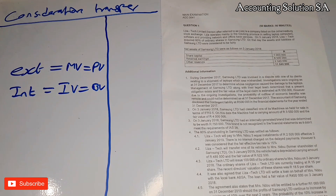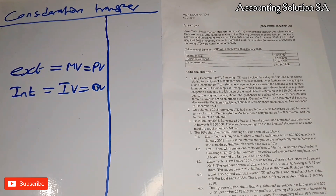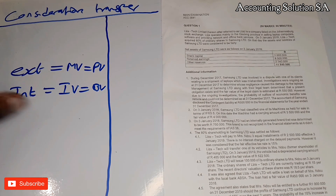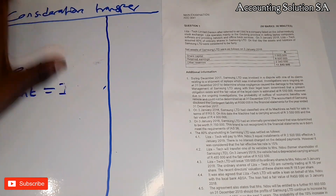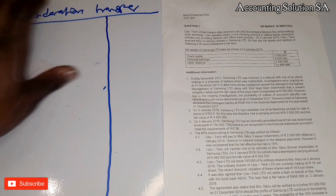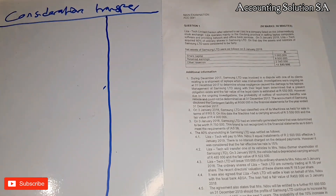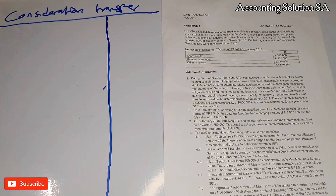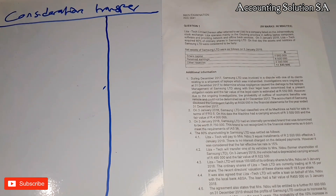So when we calculate a consideration transfer, they are going to give you two amounts, and you have to pick one amount depending on whether it's internal or external. In this case, we found that we just purchased 80% of shares in Samsung Ltd and we never owned any shares from Samsung Ltd before, which means that we are dealing with an external case.